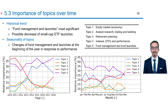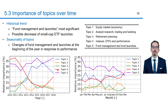Finally, I analyzed the importance of topics over time. The figure on the left shows the relative importance of topics for each year. Topic 5 about fund management and fund launches is the most significant topic in the dataset. Moreover, topic 4 about indexes, ETFs, and performance decreases over time. One could assume that fewer small cap ETFs are launched since this topic is mainly refined to ETF launches when more topics are identified. This interpretation is, however, hypothetical and should be tested in future research.